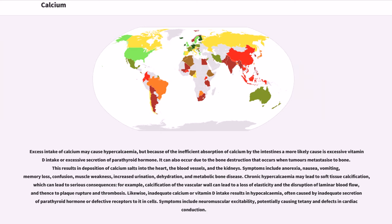Excess intake of calcium may cause hypercalcemia, but because of the inefficient absorption of calcium by the intestines a more likely cause is excessive vitamin intake or excessive secretion of parathyroid hormone. It can also occur due to the bone destruction that occurs when tumors metastasize to bone. This results in deposition of calcium salts into the heart, the blood vessels, and the kidneys. Symptoms include anorexia, nausea, vomiting, memory loss, confusion, muscle weakness, increased urination, dehydration, and metabolic bone disease.